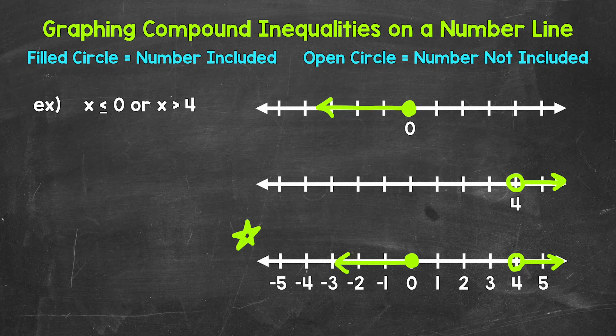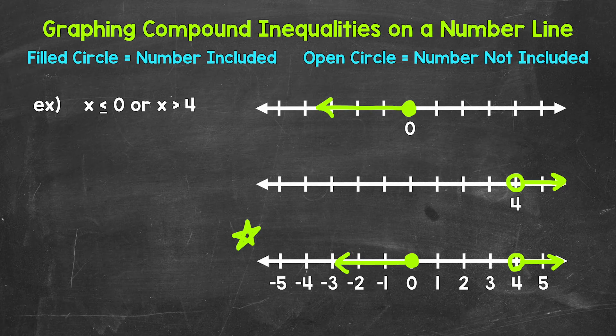So this is our graph of the compound inequality. This represents x is less than or equal to 0 or x is greater than 4. So as far as solutions, some numbers that will work for x and make this compound inequality true, let's try a couple of numbers out.